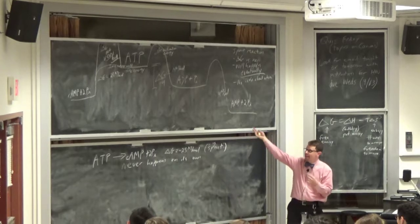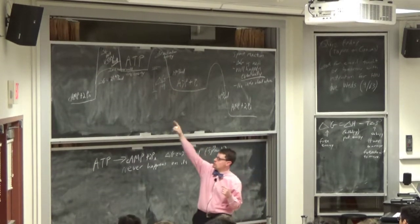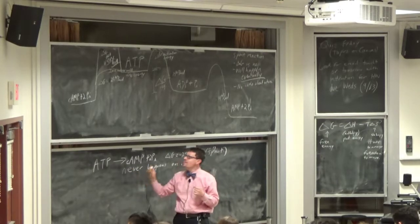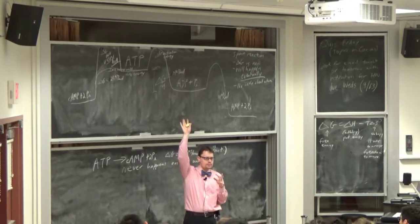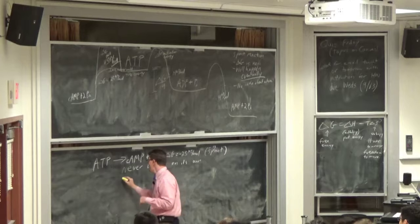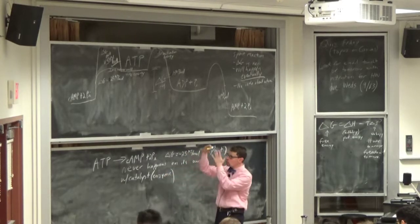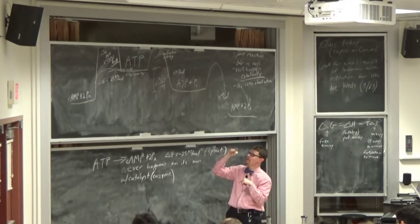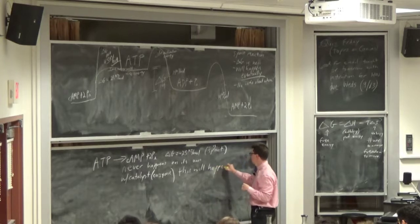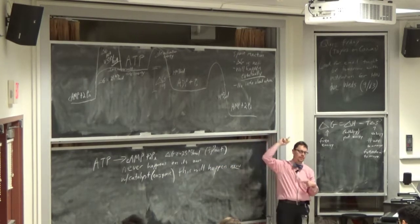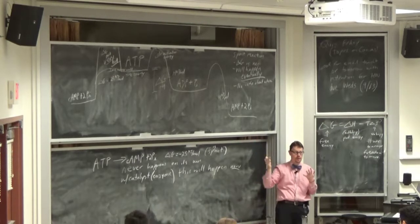If I put in an enzyme — a catalyst — that decreases the activation energy specifically for the reaction from ATP to cyclic AMP, then in the next second or tenth of a second, that ATP will go to cyclic AMP. Come back in a week and you'll still have AMP, but for at least a few seconds you'll have some cyclic AMP that maybe your cell needs to do some other chemistry with.